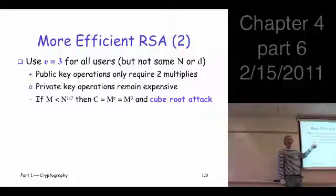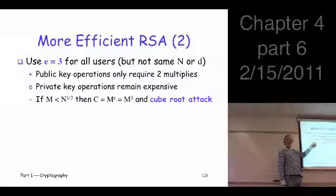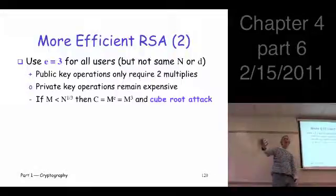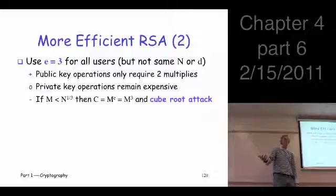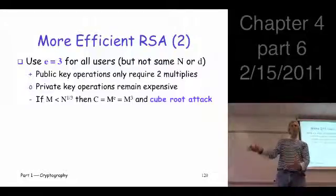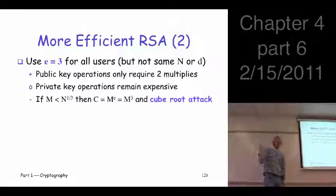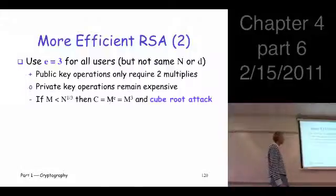It's m cubed. You tell me about m cubed. It's less than n. If a number's less than n, what happens when you take it mod n? Nothing. So you take this m cubed. You take it mod. Nothing happened. So I'm sending m cubed. You're the attacker. You see m cubed comes by. How do you get m? Punch it in your calculator and say cube root. You get m. So it's very easy to attack in that particular case. It's trivial to get the message back in that case.